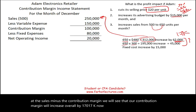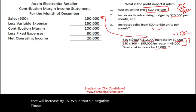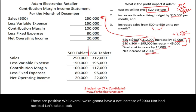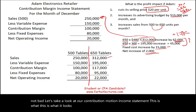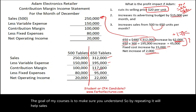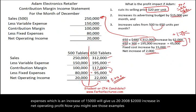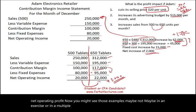Fixed cost — the advertising budget — increases by $15,000. Net impact: contribution margin up $17,000, fixed cost up $15,000 = net increase of $2,000. On the contribution margin income statement: sales minus variable expenses gives contribution margin, minus the increased fixed expenses of $15,000, gives us $22,000 net operating income — a $2,000 increase in profit. Not bad.